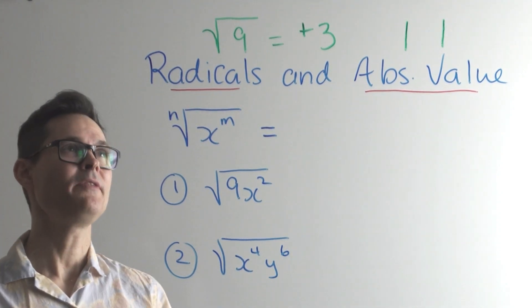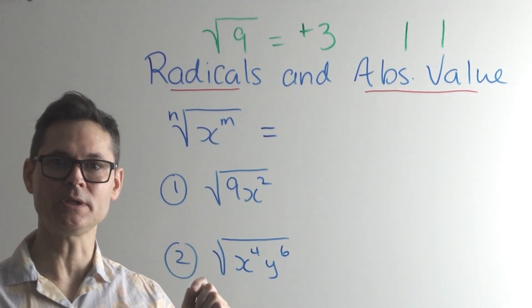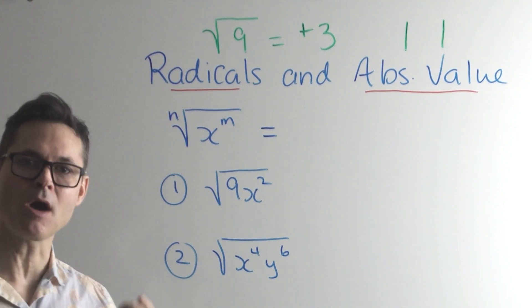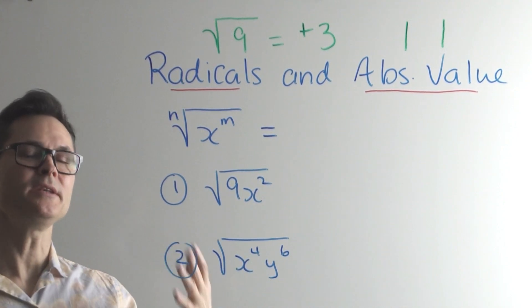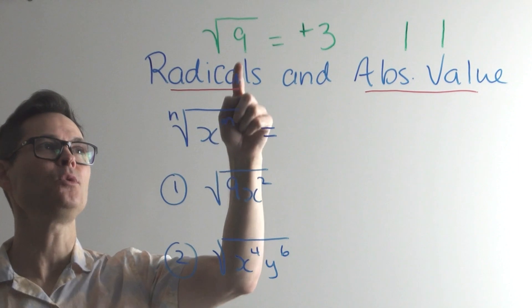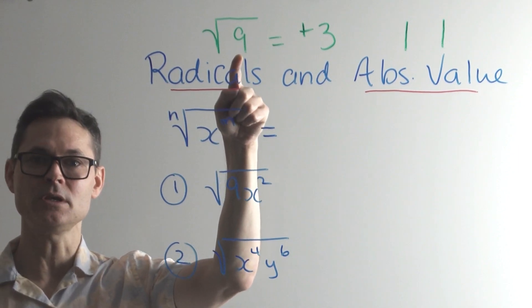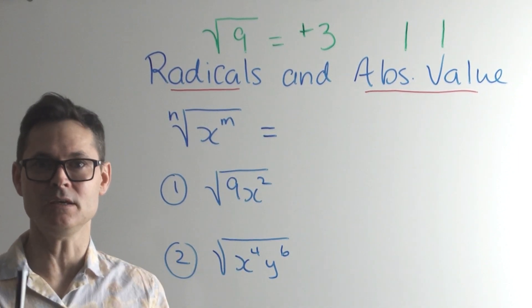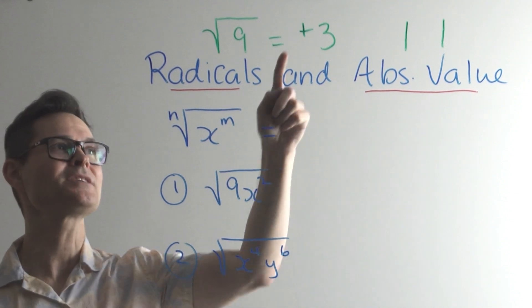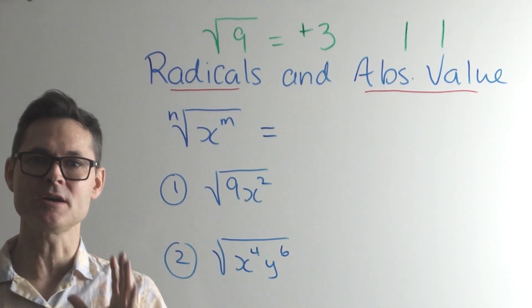And that has to do with the definition of that square root symbol. On its own, it means what's the positive square root? What's the number that when multiplied by itself will give the number under the radical? The 9. Now we know that negative 3 times negative 3 is also 9, but it doesn't want the negative case. It wants the positive case.